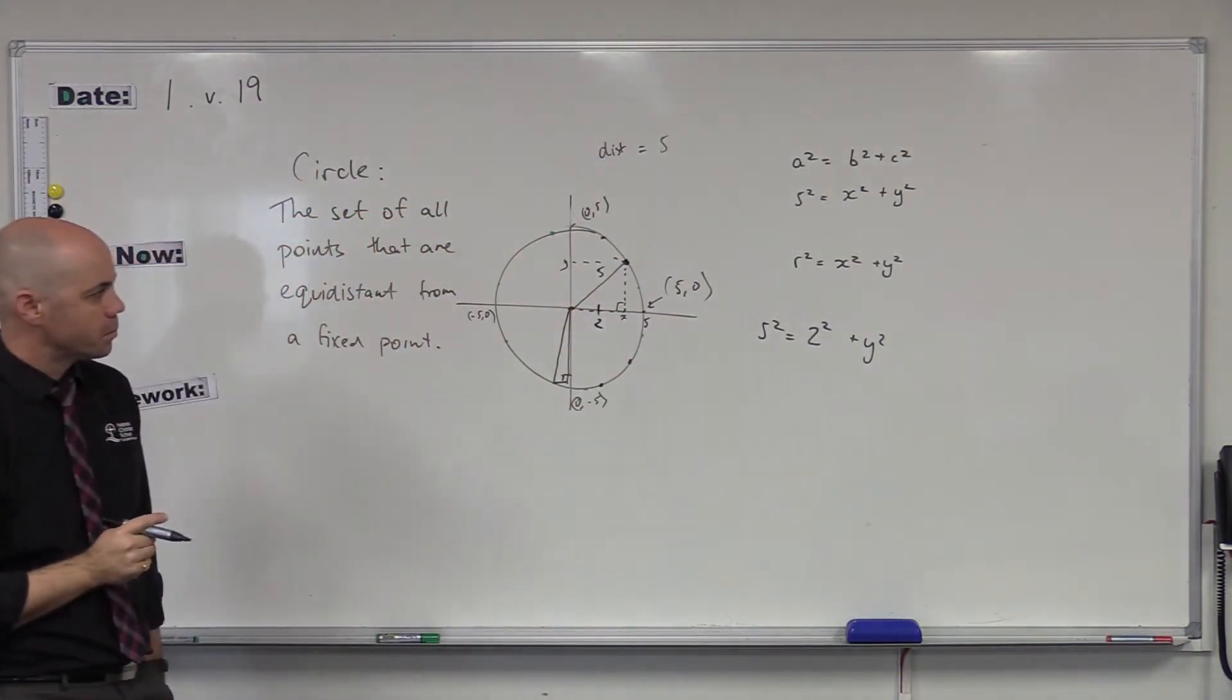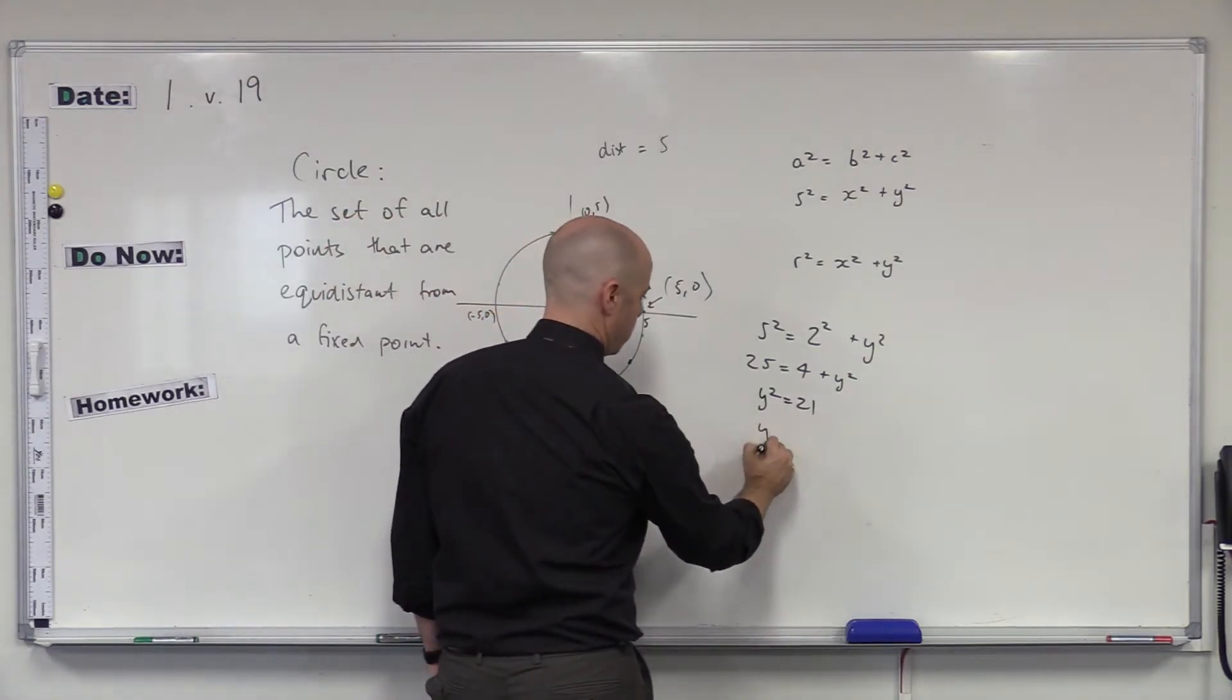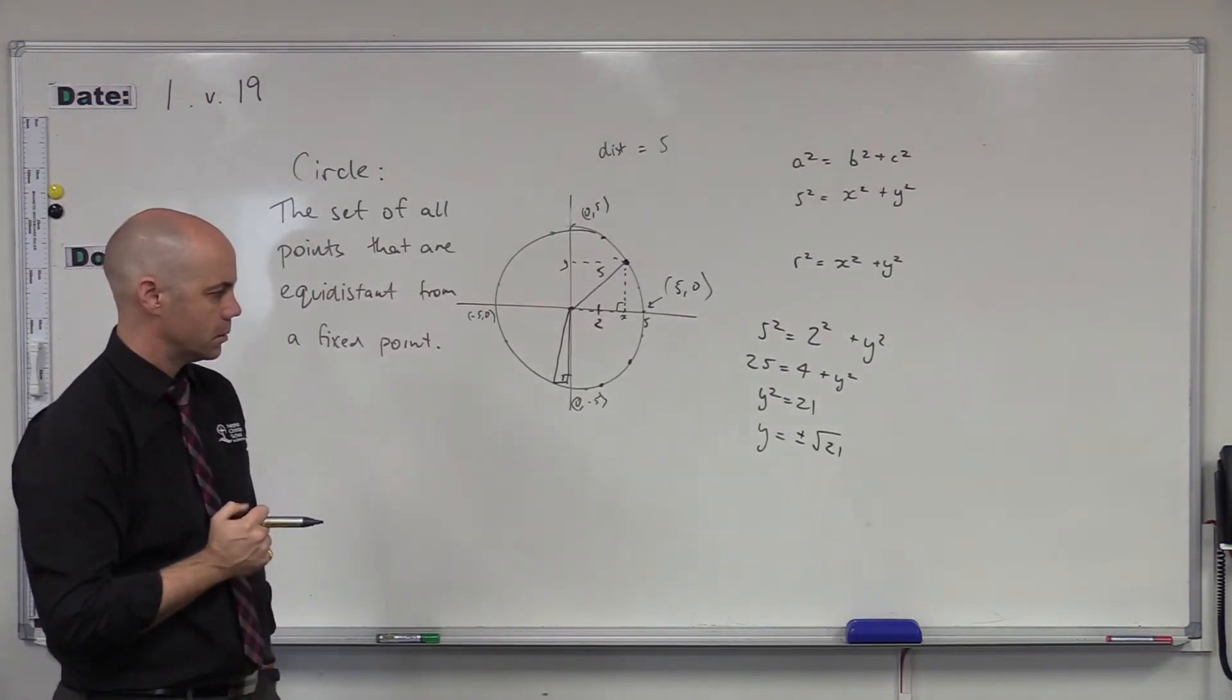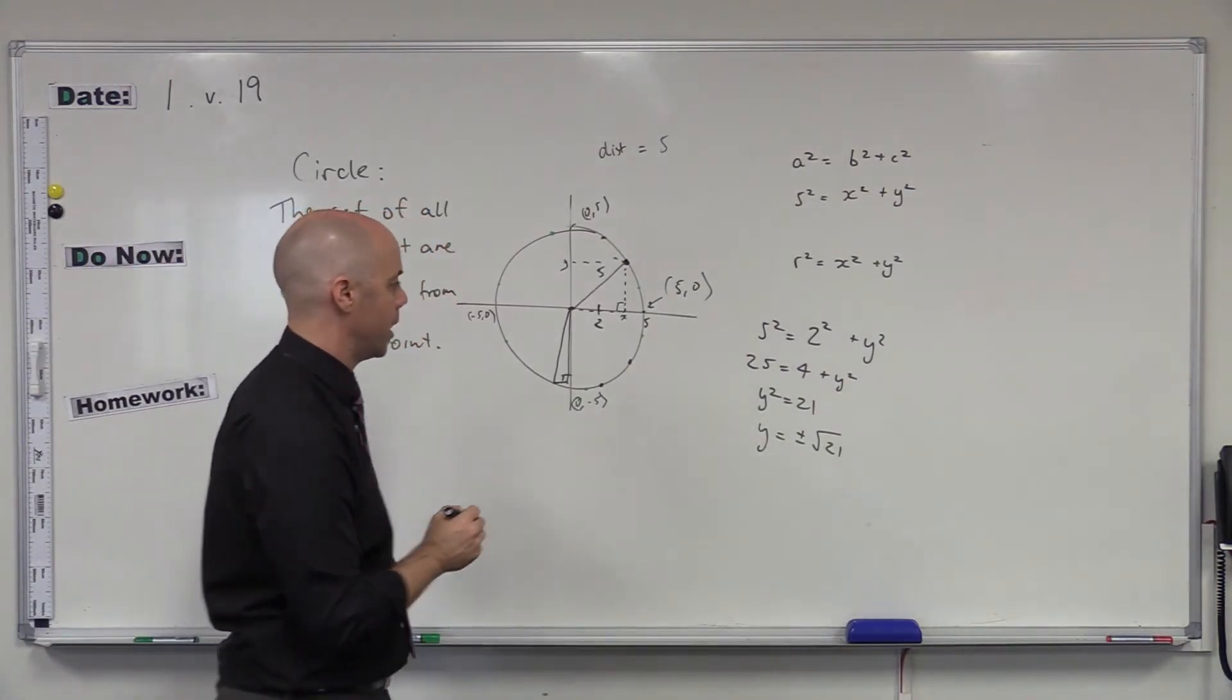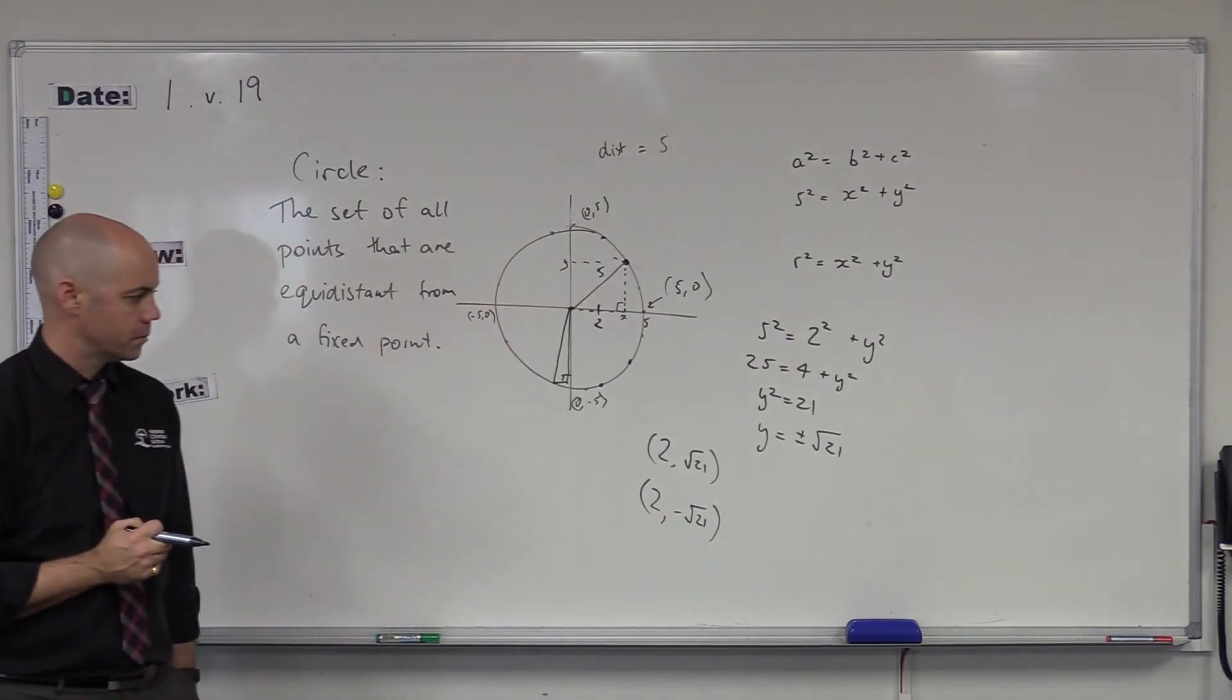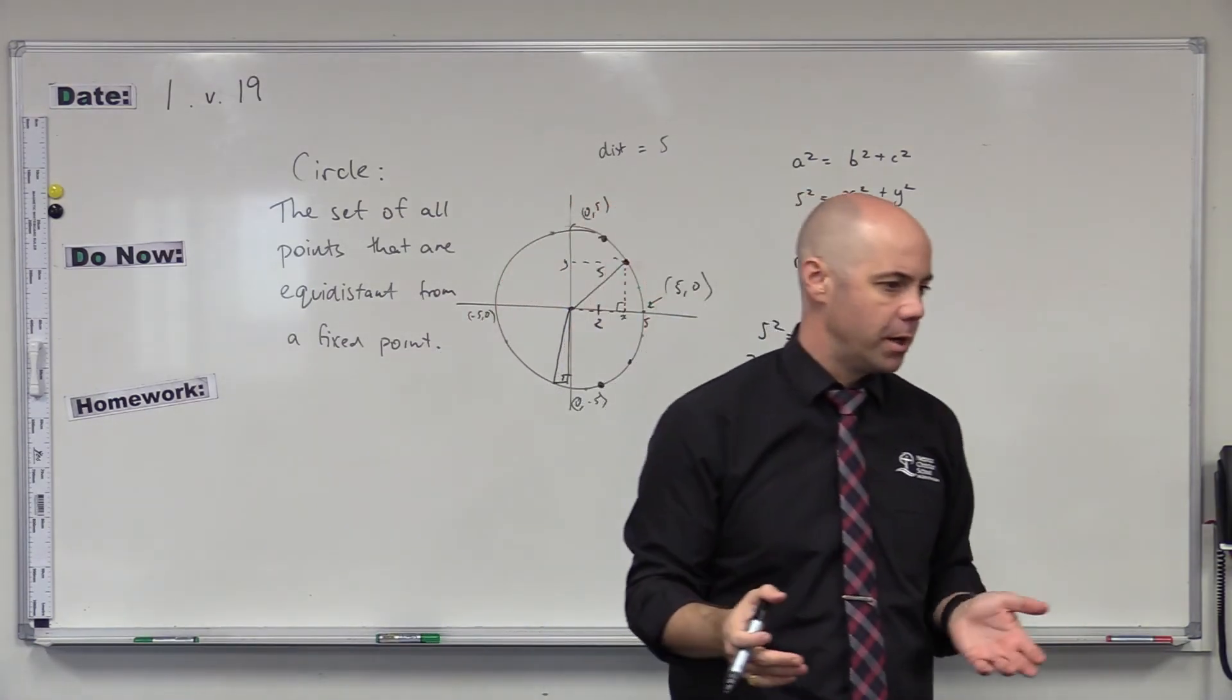So five squared, 25 equals four plus Y squared. Therefore, Y squared equals 21. What does Y equal? Plus or minus square root of 21. Plus or minus square root of 21, which is four point something. And so the two points are two comma root 21 and two comma negative root 21. They're those two points that have an X value of two. Okay. So using our equation, we can now find any point we need to find on the circle.